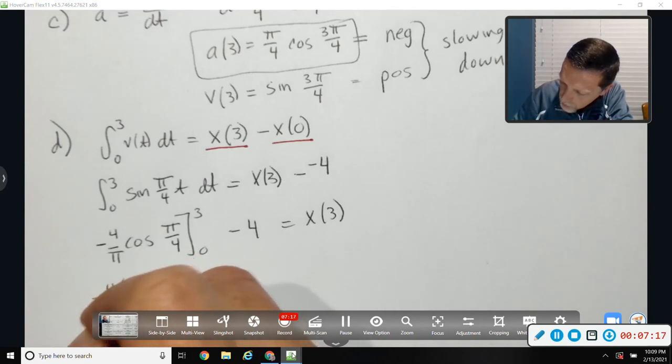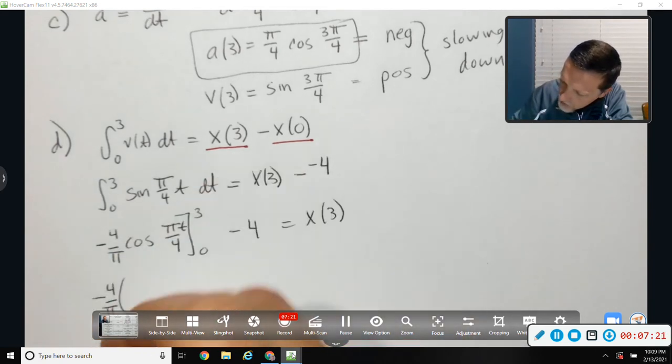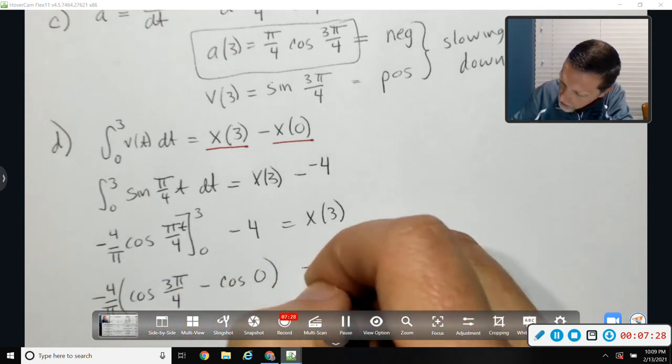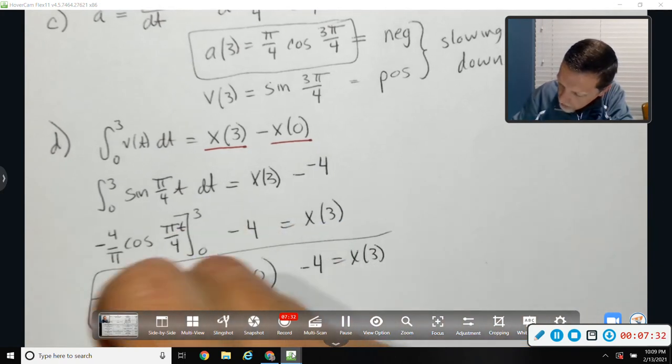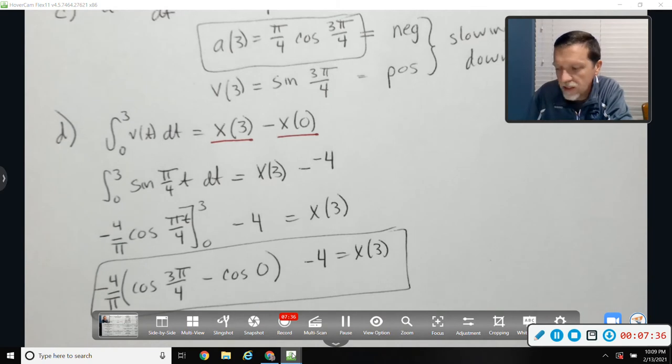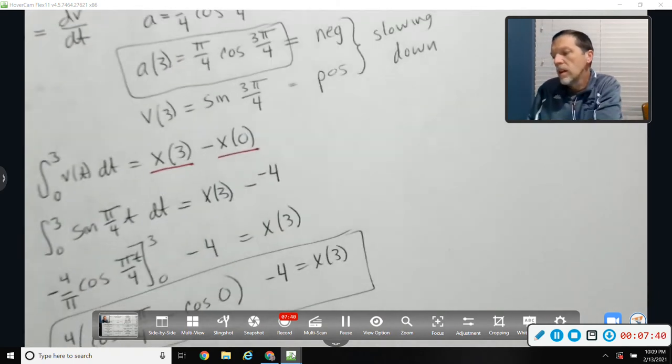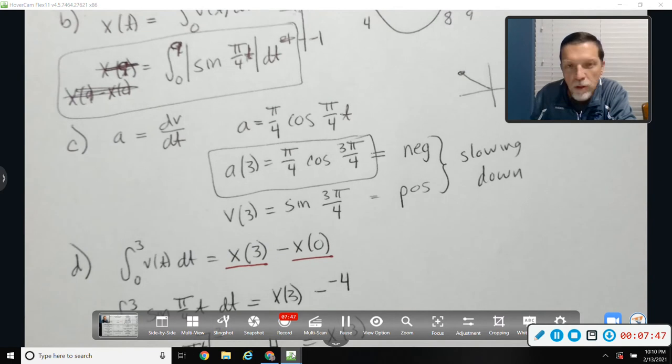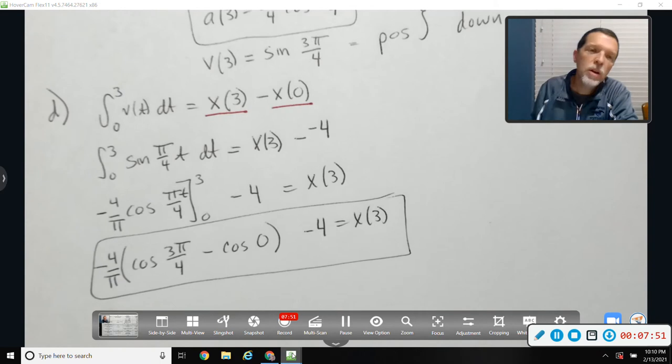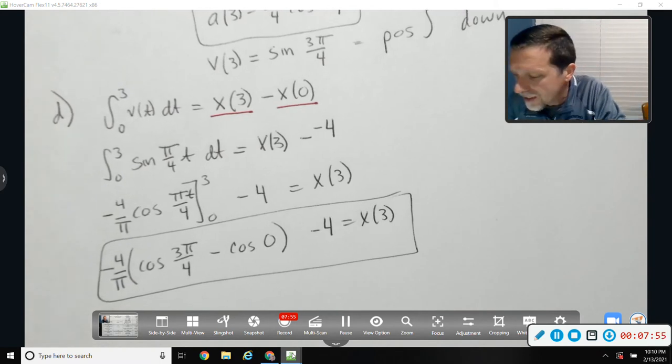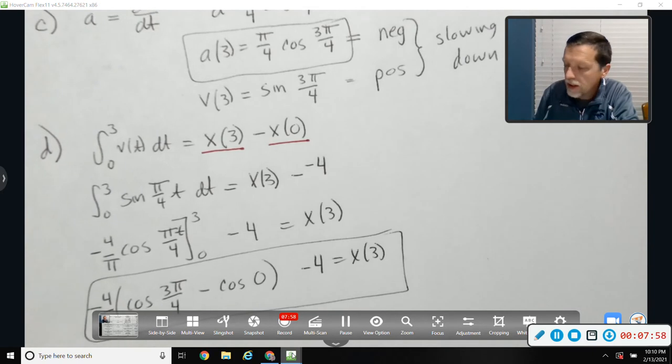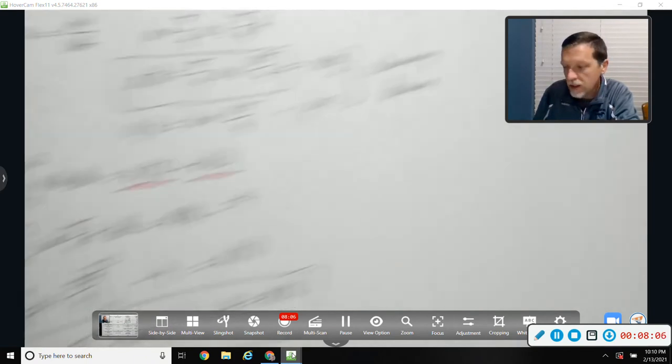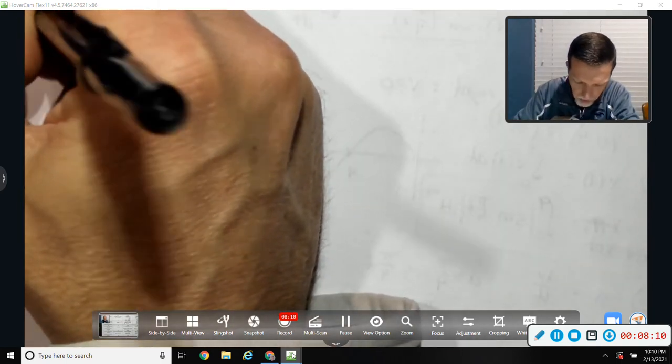So negative four over pi out front. Cosine three pi over four minus cosine of zero minus four. I don't know what that is, but I don't need to know what that is. That is a safe stop answer. All right, that took me seven and a half minutes to do. That would be a good free response question on AP test. You have 15 minutes per question on the AP test. So if you felt like I did that fast, I did. I did it twice as fast as you would need to do it.